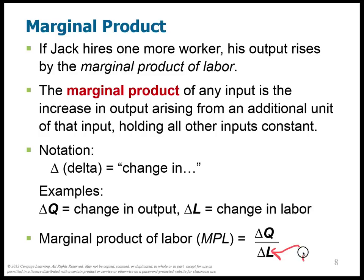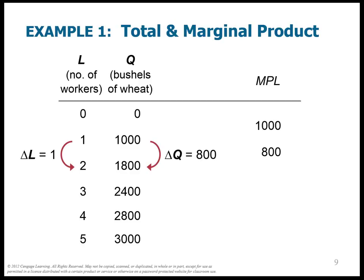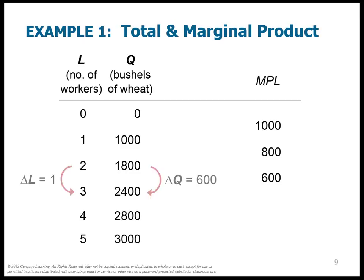Let's look at the marginal product of labor. If I go from 0 to 1 worker, I have 1,000 additional units of output. So 1,000 divided by 1 is just equal to 1,000 — that's the marginal product of labor for the first worker. But for the second worker, going from 1 to 2 workers, I only get 800 additional bushels of wheat, so MPL is 800. From 2 to 3 workers I get an extra 600; from 3 to 4, an extra 400; and from 4 to 5, an extra 200.